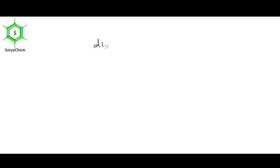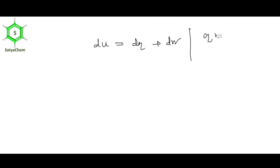I am going to write the first law of thermodynamics in differential form: dU = dq + dW. Here, q and W are path functions, while U is a state function. It is very good practice to note this distinction whenever you write the first law.